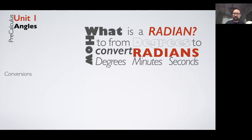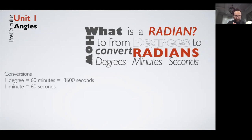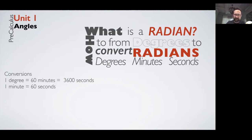This allows us to find locations very specifically. Converting back and forth between these systems is fairly simple. Key conversions: one degree equals 60 minutes, one minute equals 60 seconds, and one degree equals 3600 seconds. You can think of a degree like an hour — degrees, minutes, and seconds work the same way as hours, minutes, and seconds in time.